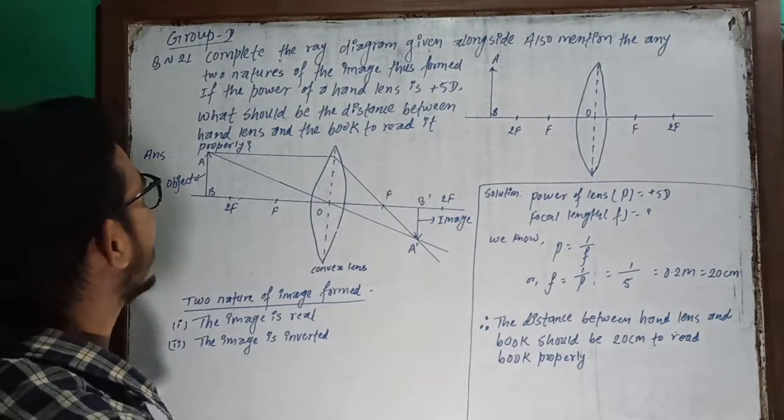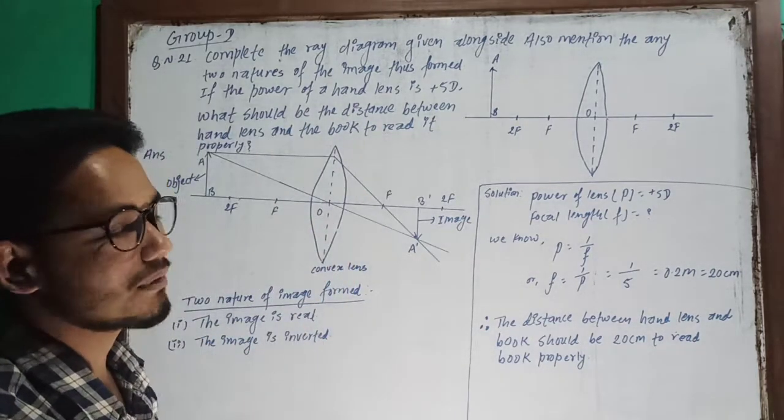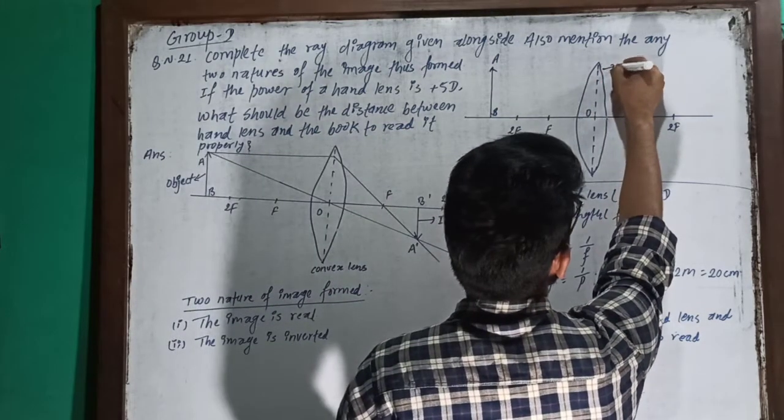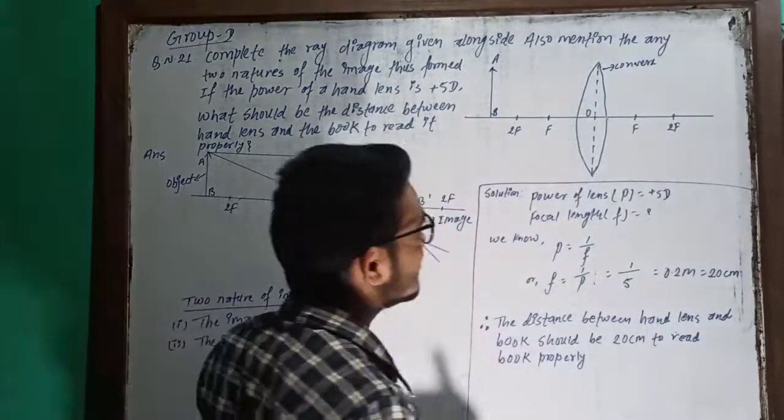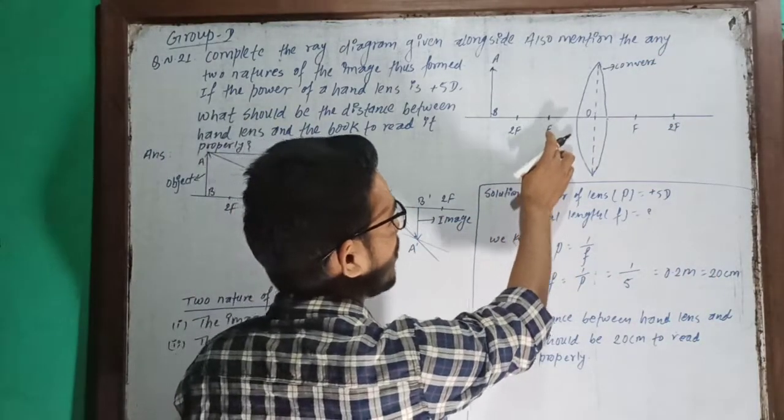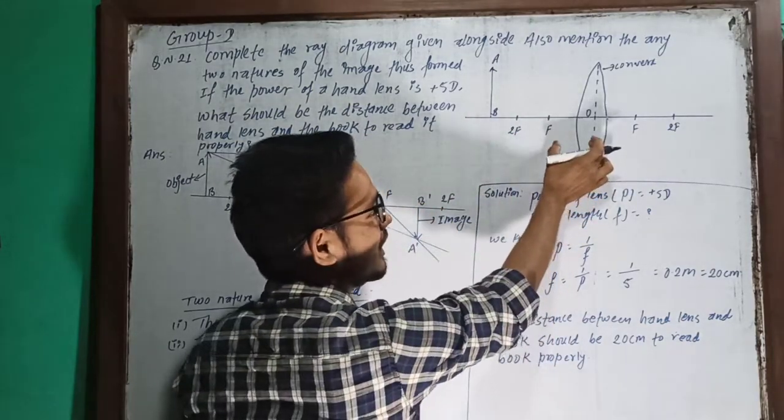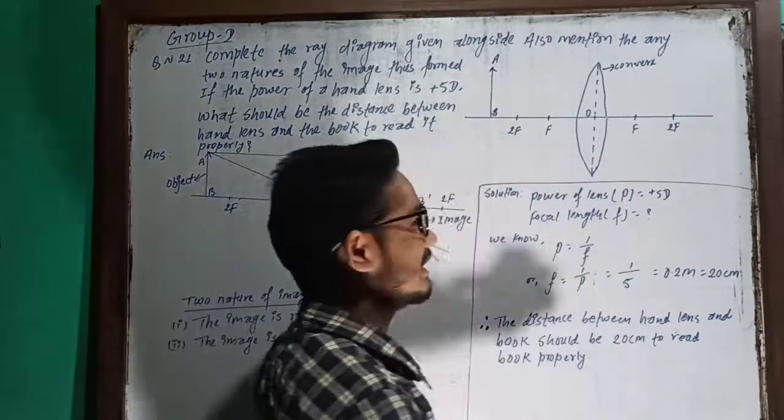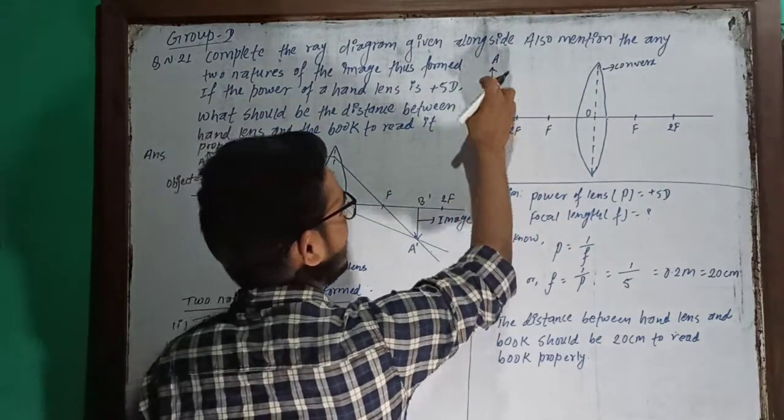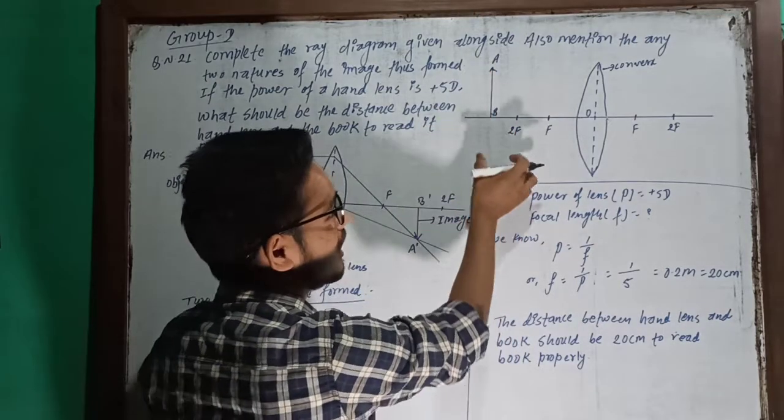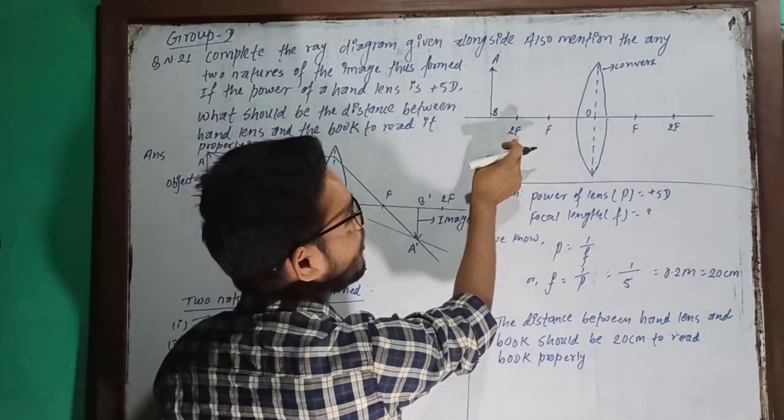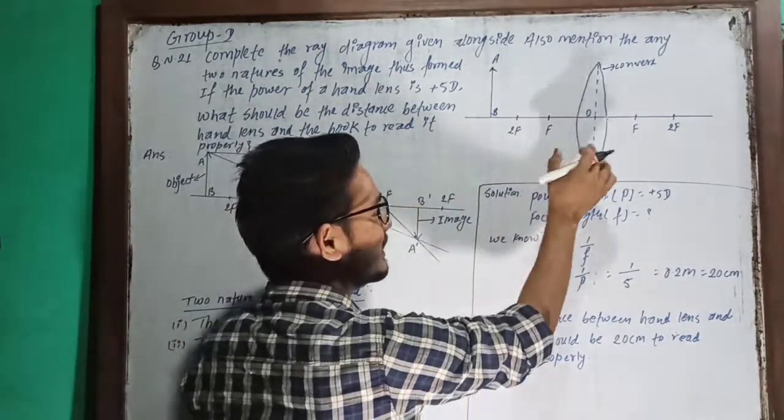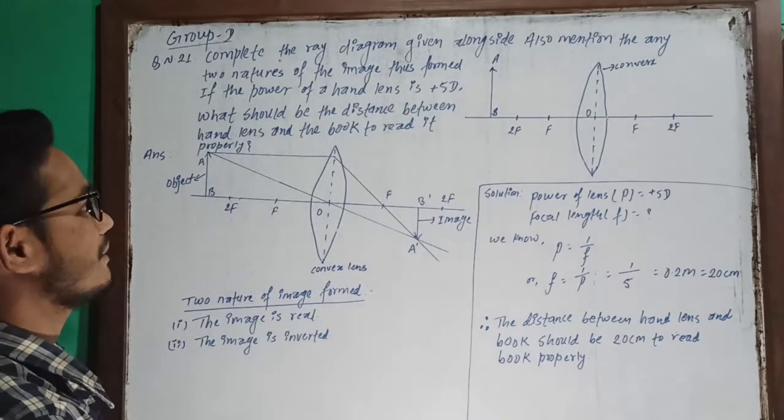First, I will complete the ray diagram. The ray diagram is for convex lens. Convex lens is here. The focal length and the 2F is the equal length point. Same way on the other side. Object AB is here. Object AB is given. Object is placed beyond the 2F. In that condition, this is the ray diagram. The ray diagram is to be completed.